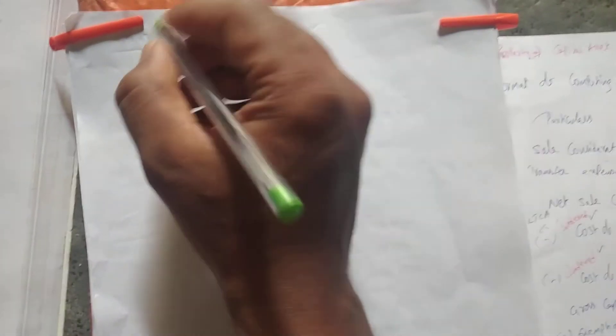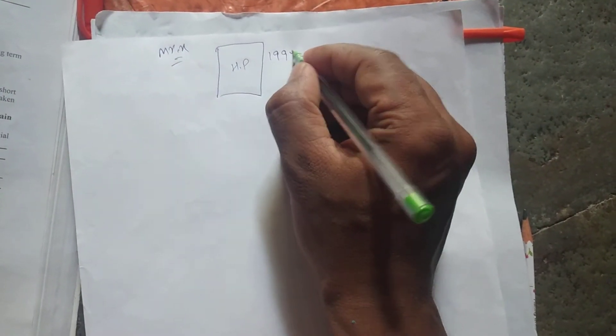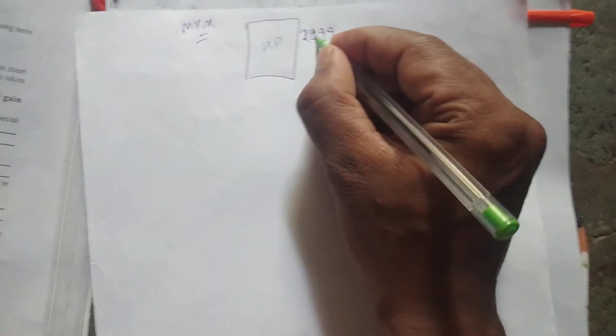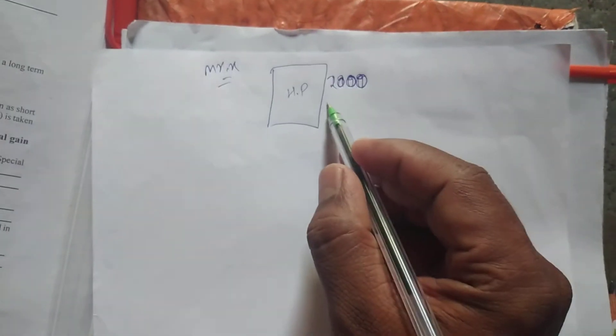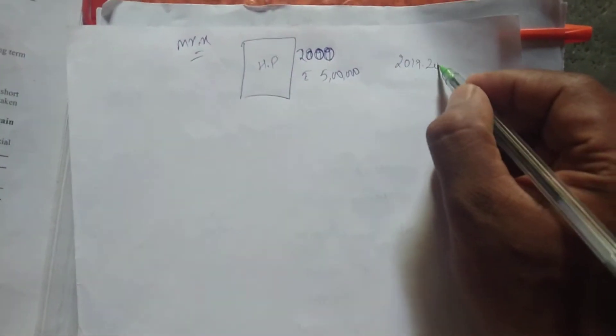As economic students, we know inflation means every year the price of products or properties will rise — that is called inflation. Take example: there is one person, Mr. X. He purchased a house property in the year 2000 for rupees 5 lakhs. Now he sold that property in the year 2019-20 for rupees 5 crores.